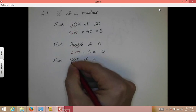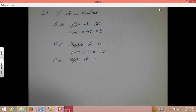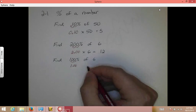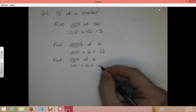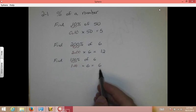to the left, to the left, so we have 1.00 times 6, and that is going to equal 6. So, when you find 100% of a number, you end up with the same number.